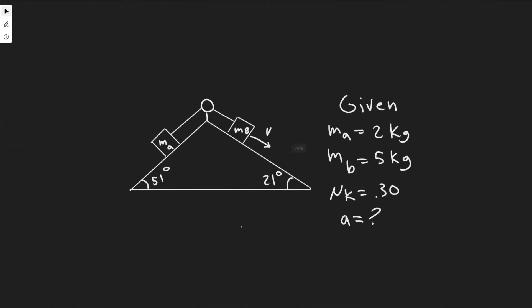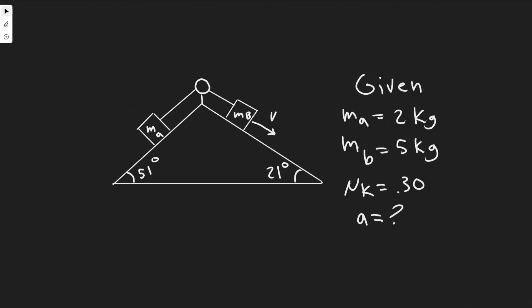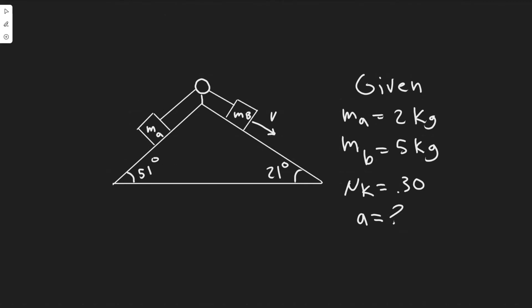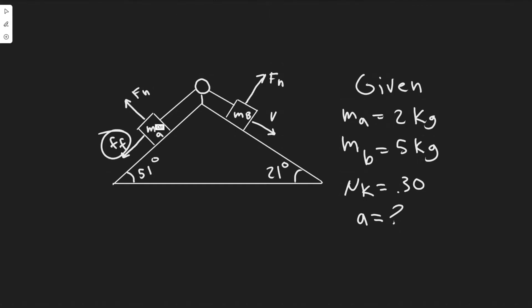To solve this problem, the first thing I recommend is drawing the free body diagram. We're going to split these into two. The first thing acting on both is the normal force, which is perpendicular to the plane. So this one points up this way, and the other normal force acts the other way — F sub N and F sub N, just keep in mind they're two different things. We also know there's going to be a force of friction, which always acts opposite to the direction of travel.